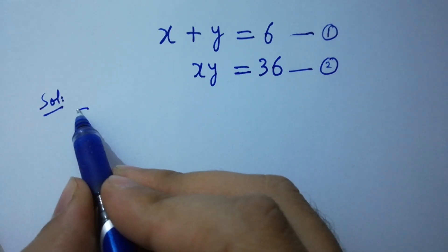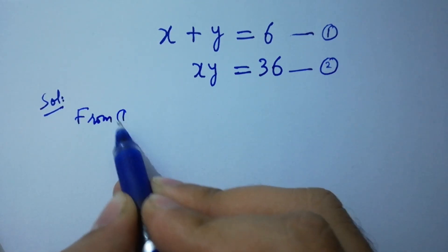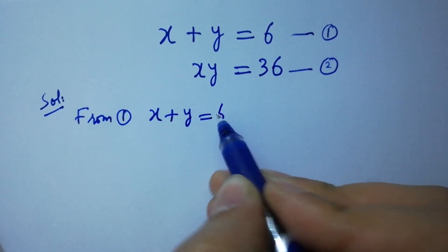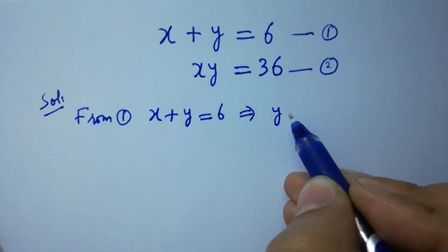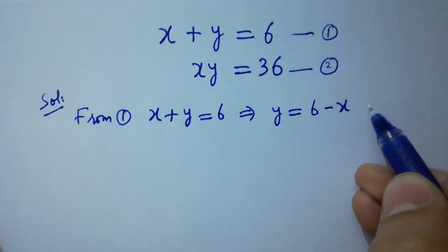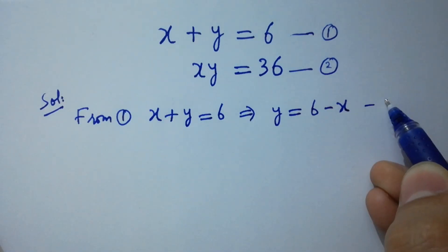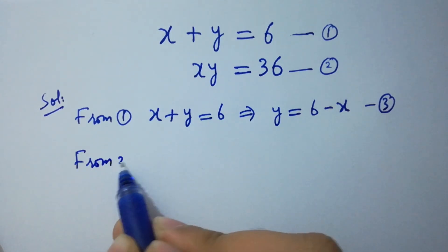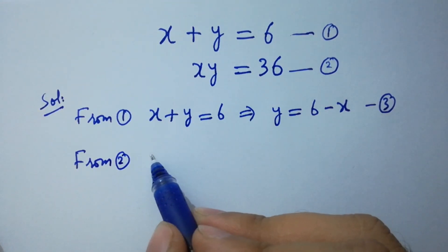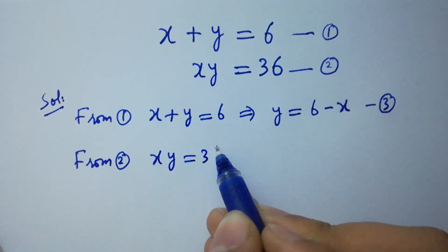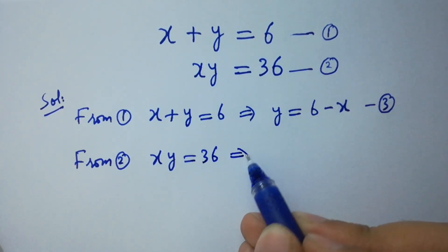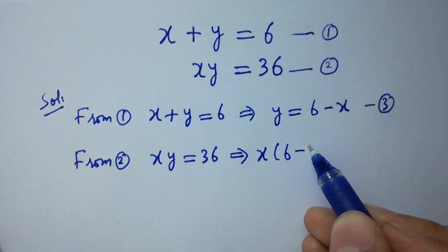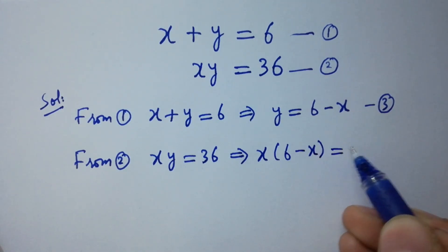From the first equation, x plus y equals 6, then y equals 6 minus x — take this as the third equation. From the second equation, x times y equals 36. Substituting the value of y, we have x times (6 minus x) equals 36.